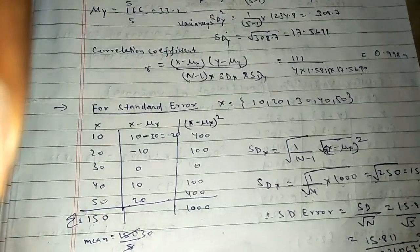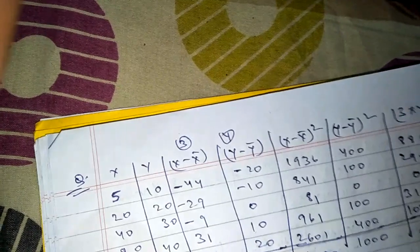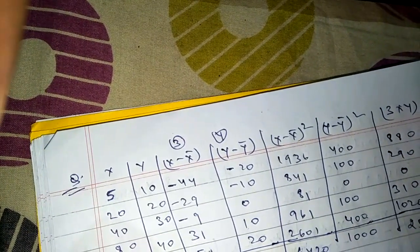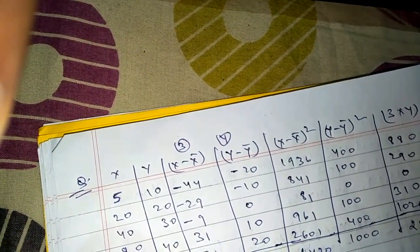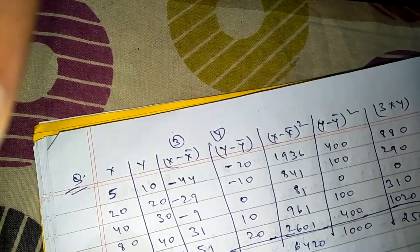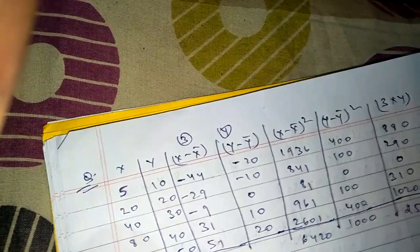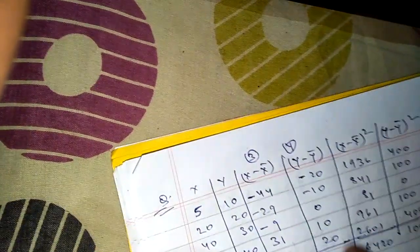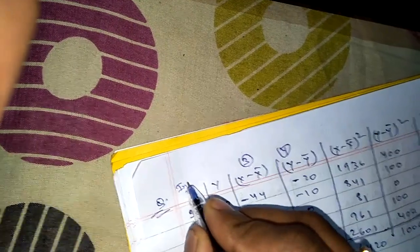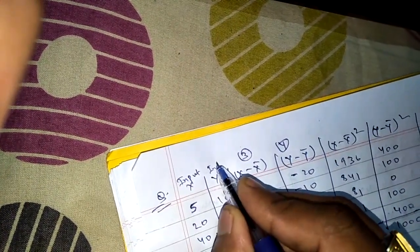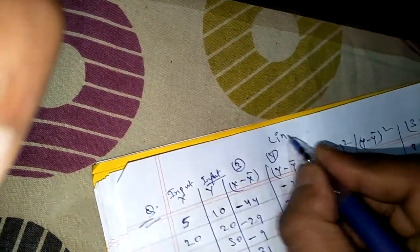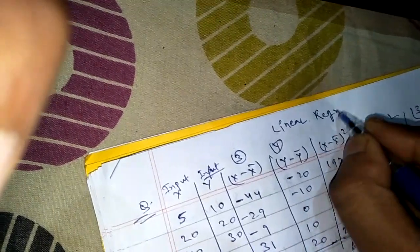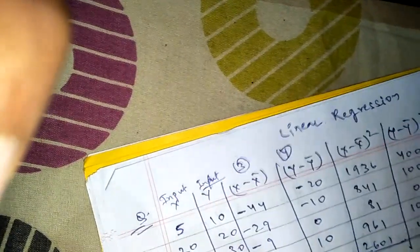Now moving to another question: find the regression line y = a + bx. This is a linear regression problem. Input values x and y are given, and we need to find the relationship between them. In linear regression, x and y values are given and we find y = a + bx.